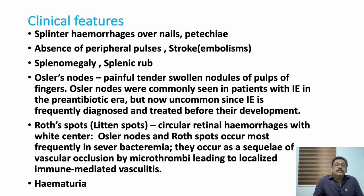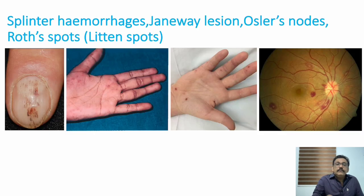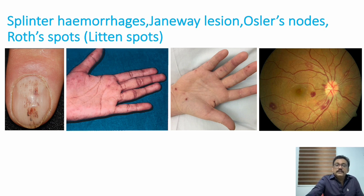Osler's nodes were commonly seen in patients with infective endocarditis during the pre-antibiotic era, but nowadays they are not very common because we routinely start antibiotics early after diagnosis. Roth spots are circular retinal hemorrhages with a white center. Hematuria can also be present in some patients.